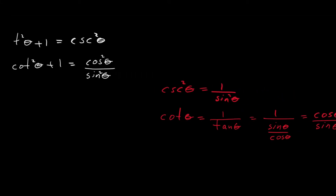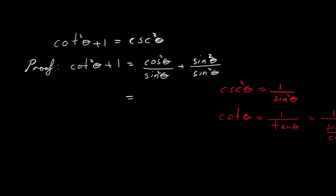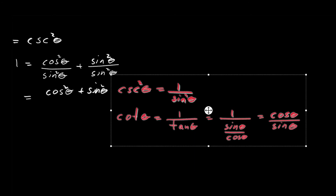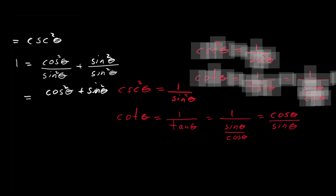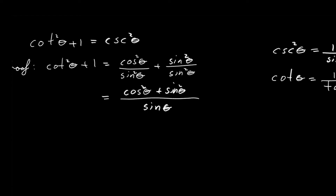We can write 1 as sine of theta squared divided by itself. The benefit of doing this is that now we have common denominators, so we can write this all as one fraction. In the numerator we have cosine of theta squared plus sine of theta squared, all over the common denominator, which is sine of theta squared.